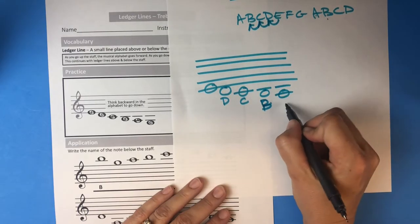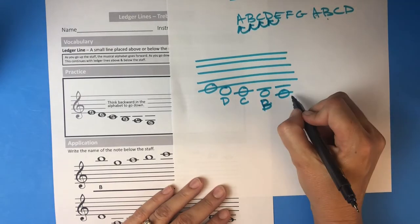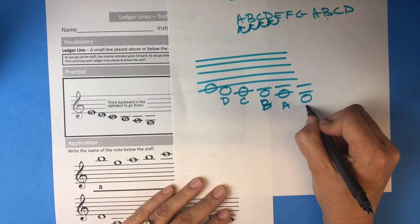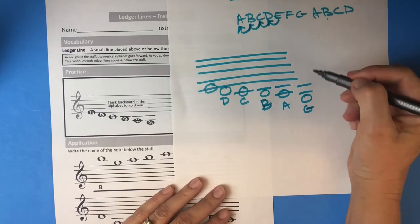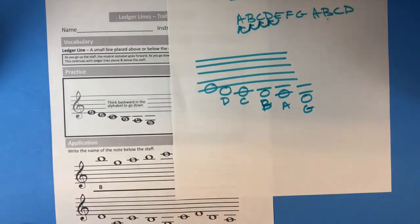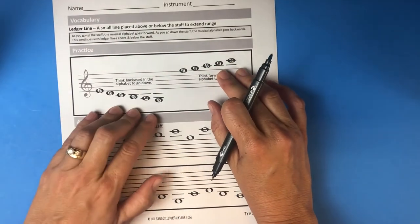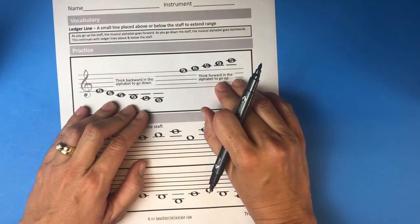And then two ledger lines, below B is an A. And then I went down to here because clarinets play this a lot - if you're a clarinet player, down to G. Now some of you, depending on your instrument, you might not ever play up here, you might not ever play down here. It just depends. But it's good to understand the way it works. It's super simple - you just say your alphabet forwards, say your alphabet backwards. That's all there is to it.